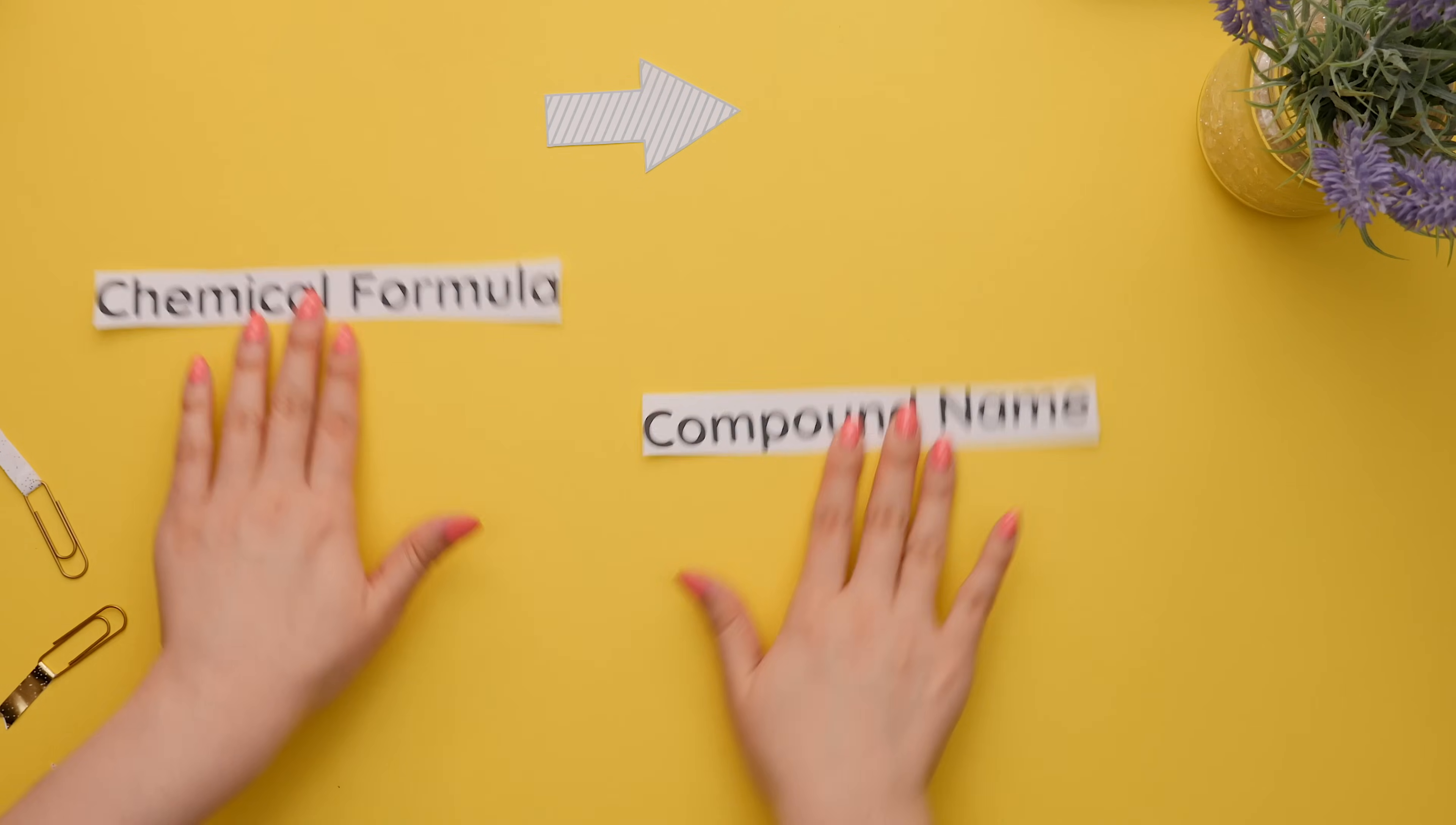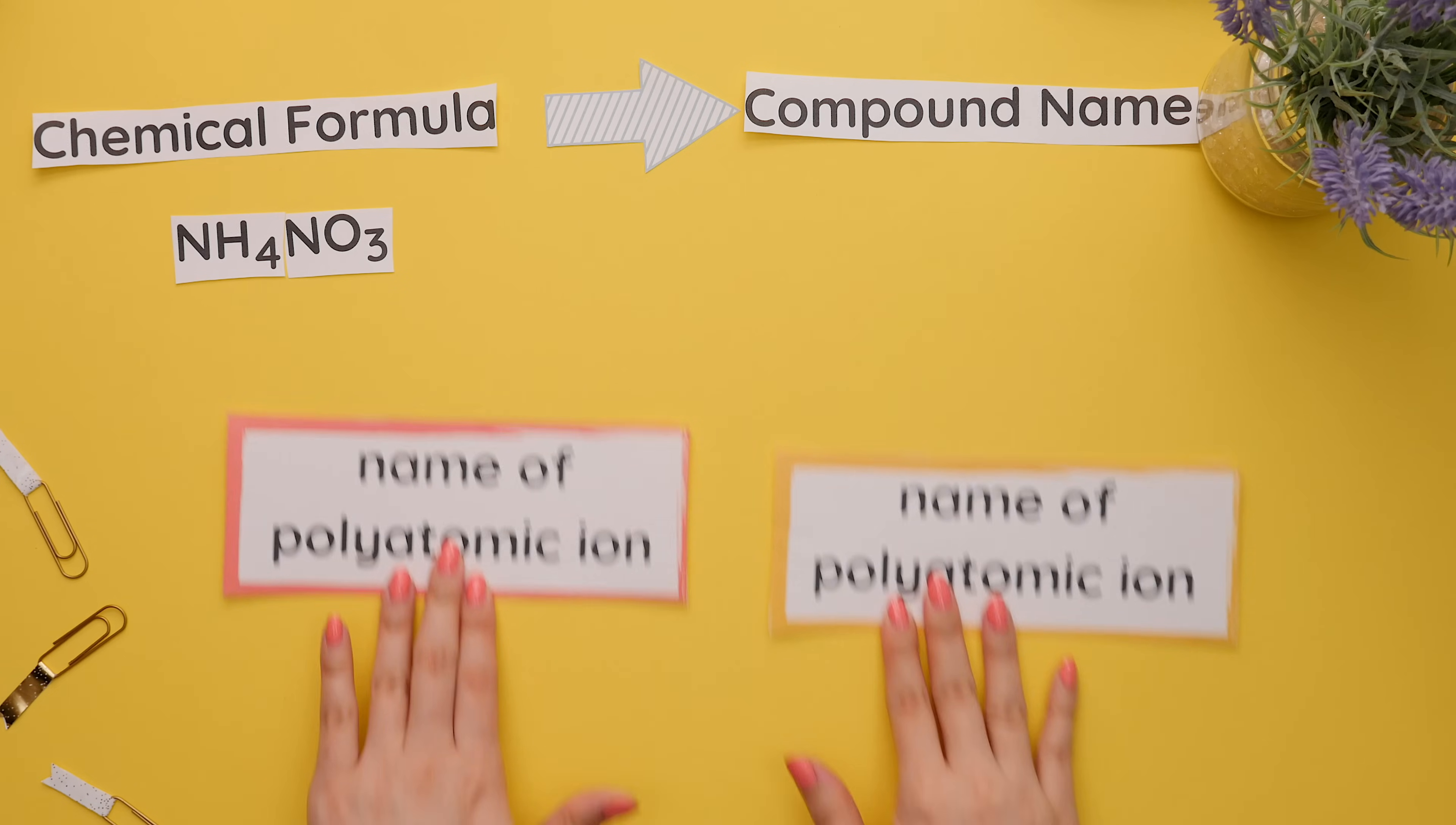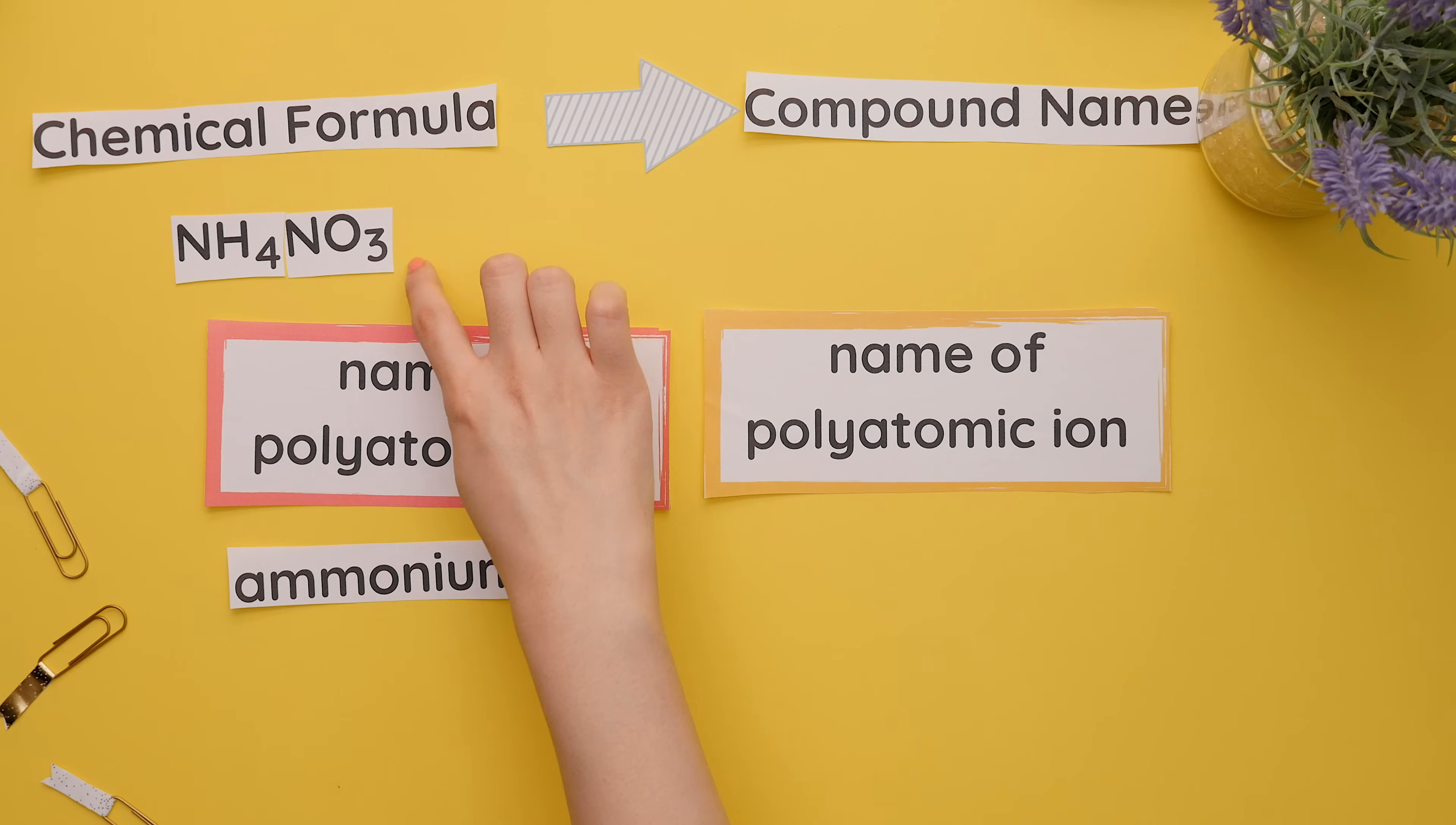Now going from the chemical formula to the compound name, we will identify each polyatomic ion's name. NH4 is ammonium and NO3 is nitrate. The compound name is then ammonium nitrate.